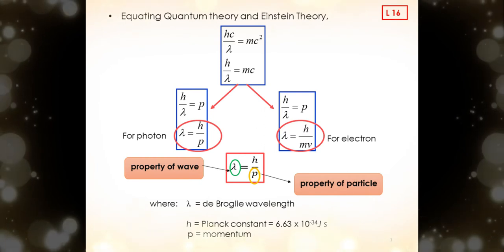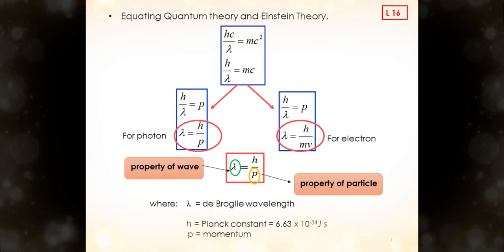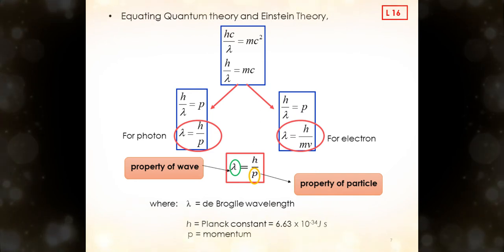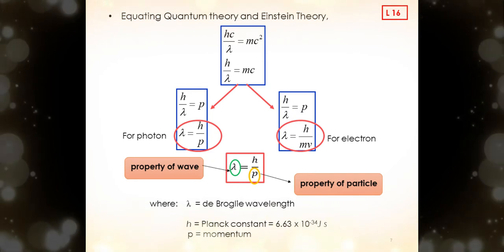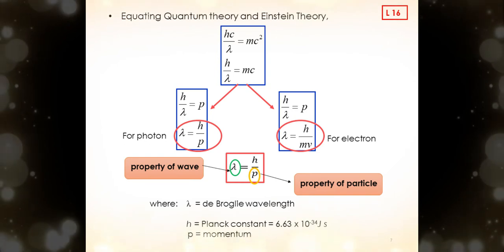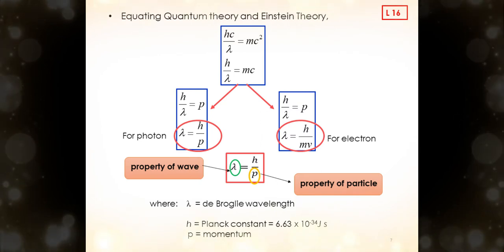As for electron, the equation for electron is lambda equals h over m times v. Here, for electron, we can calculate both momentum and mass. From equation lambda equals h over p, we can conclude that lambda is the property of wave and the momentum is the property of particle.